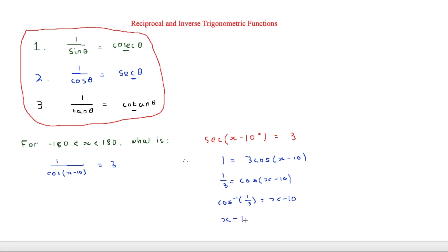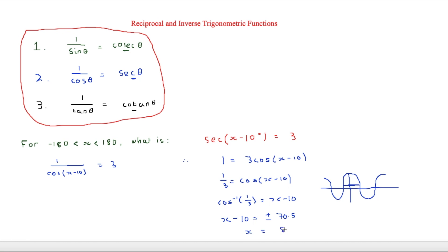Therefore x minus 10 equals plus or minus 70.5 degrees. This is because if we draw the graph of cos, we can see it is symmetrical — it gives plus 70.5 and minus 70.5. So finally we just add 10 to both, giving x equals 80.5 degrees and x equals minus 60.5 degrees. Those are our final answers for that question.